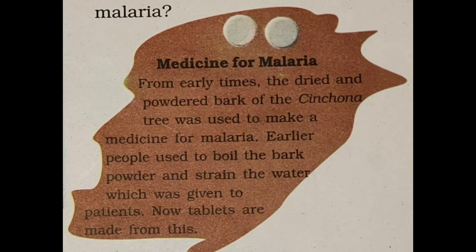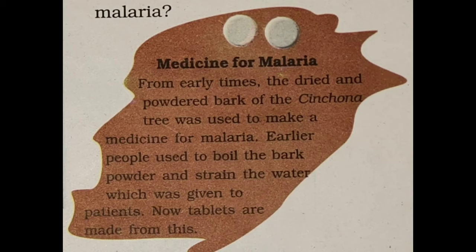From early times, the dried and powdered bark of the cinchona tree was used to make medicine for malaria. In earlier days, many types of medicines had not yet been discovered. The bark was taken from the cinchona tree, dried, and then ground into powder. This dried and powdered bark was used to make medicine for malaria.